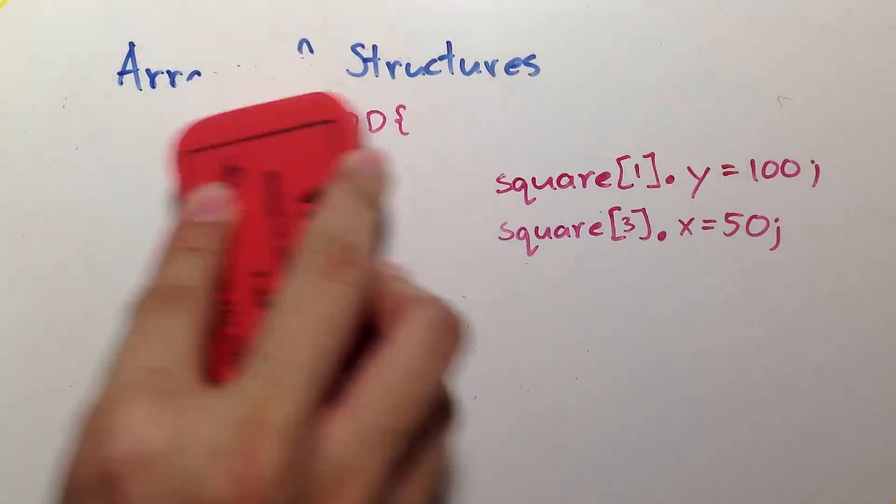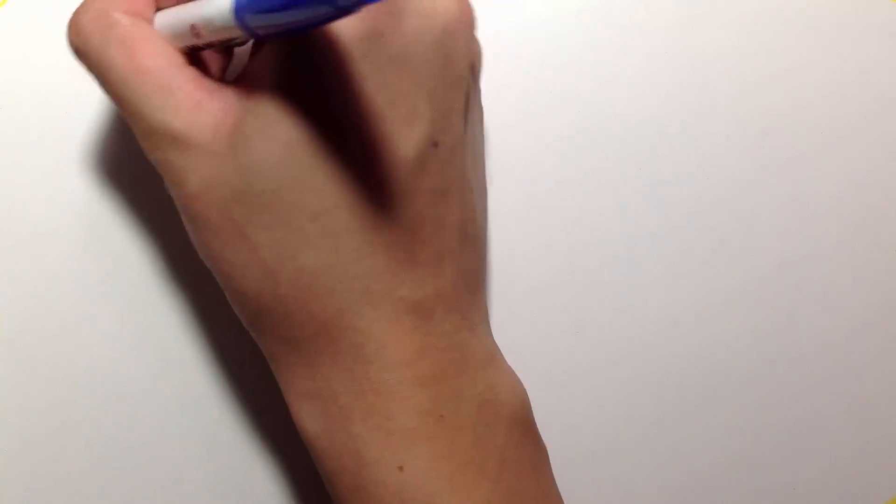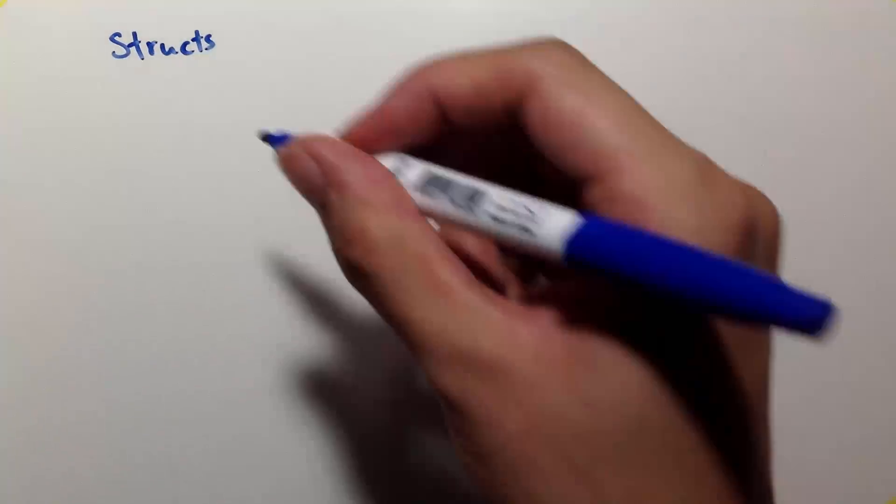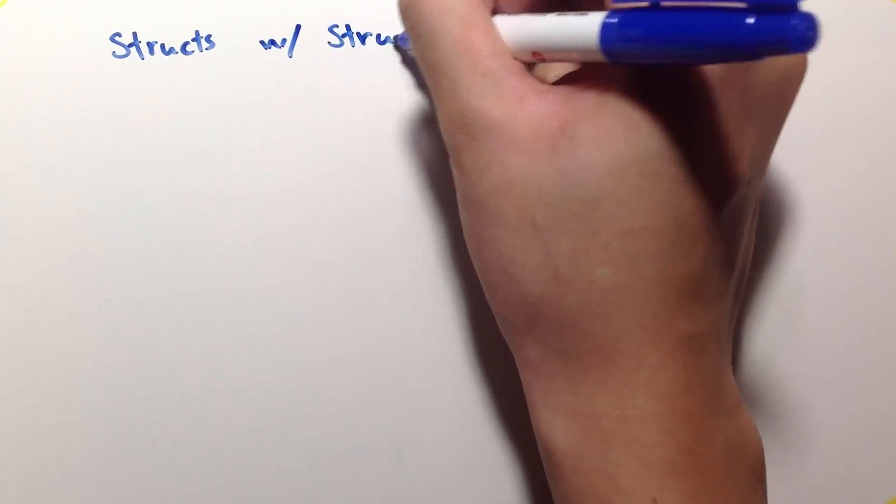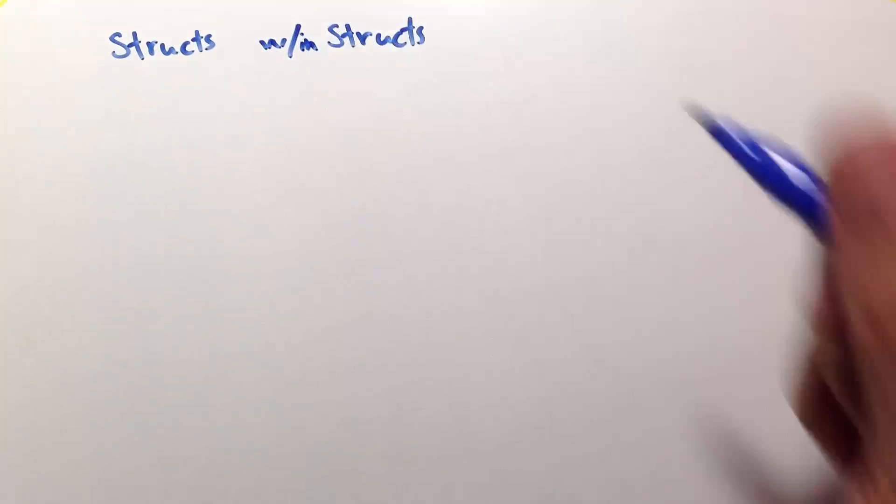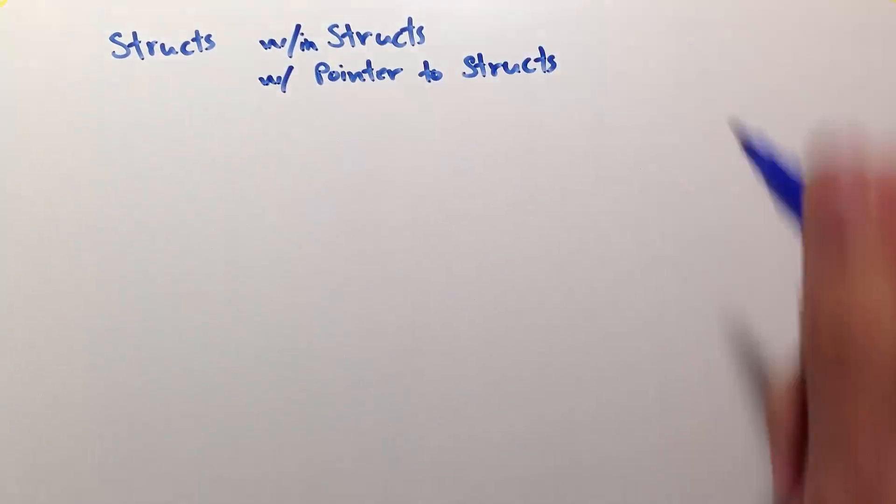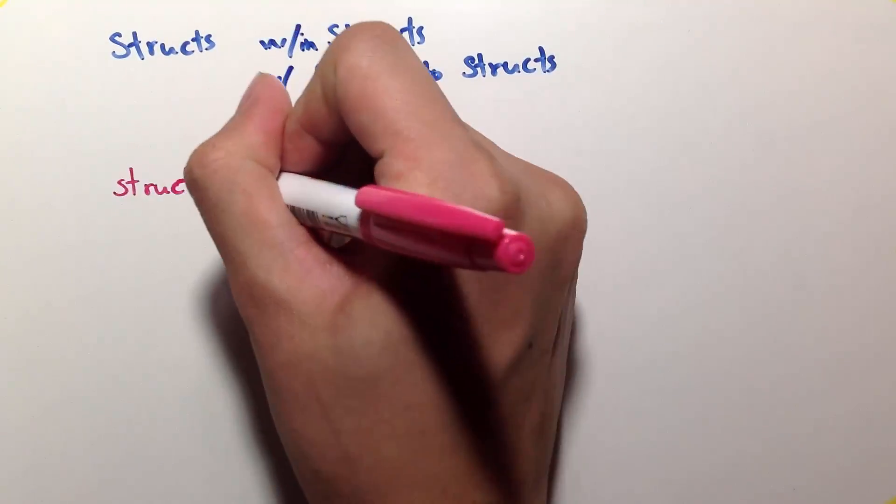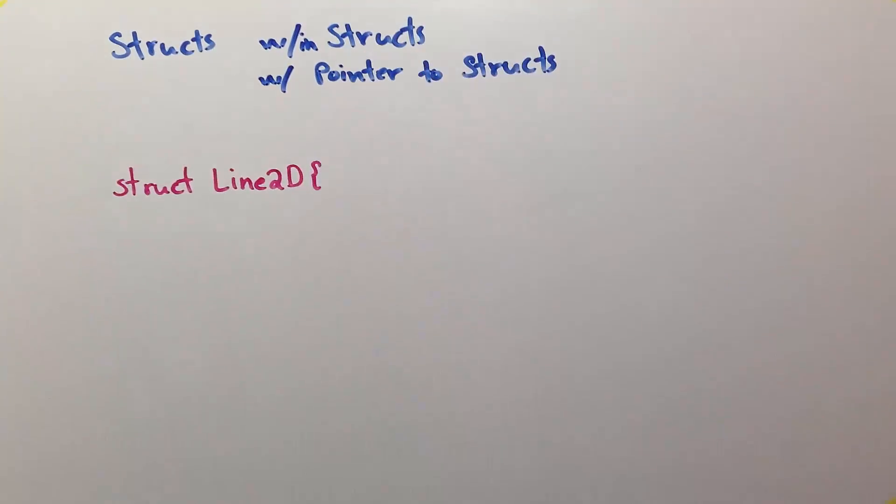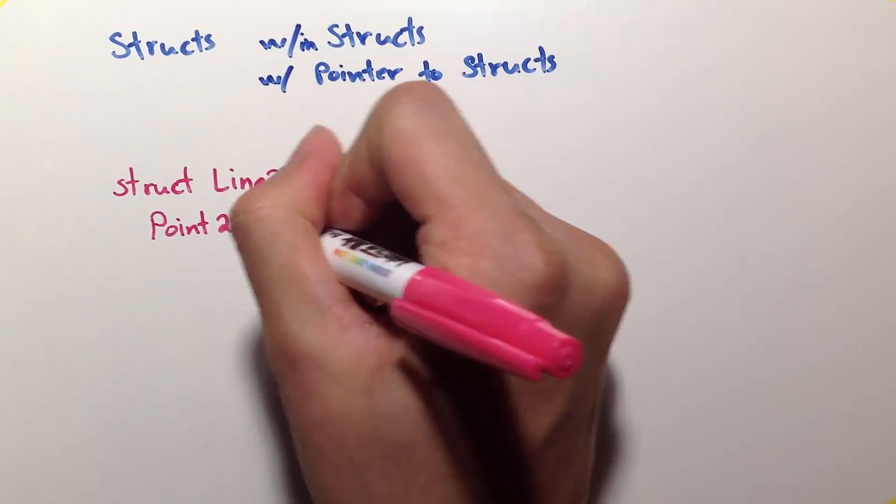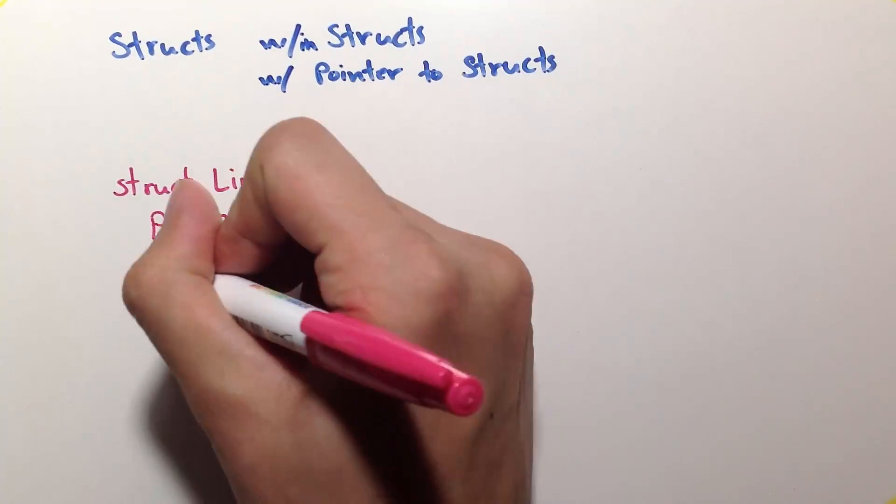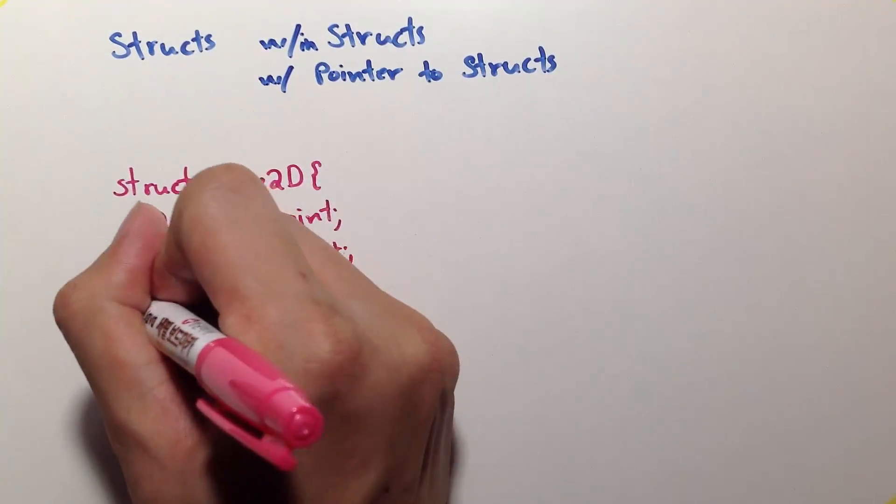Now, let's go to something trickier. This is the more confusing part of pointers and structures. Let's have structures within structures and structures with pointers to structures. Let's have a new structure called line2d, composed of two children, a point2d called point, and a pointer to a line2d called next.